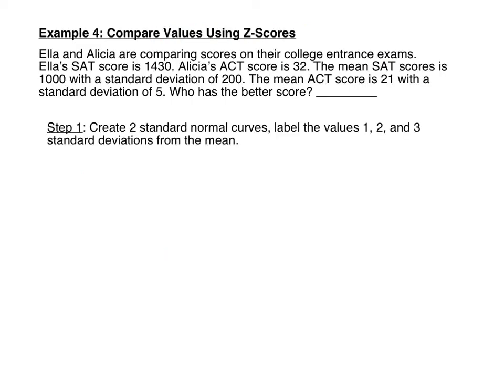For this example, two students have taken two different college entrance exams and we want to figure out which student did better. Ella and Alicia are comparing scores: Ella's SAT score is 1430, Alicia's ACT score is 32. The mean SAT score is 1,000 with a standard deviation of 200. The mean ACT score is 21 with a standard deviation of 5. Because these tests have different means and standard deviations, we'll draw two standard normal curves and label one, two, and three standard deviations from the mean.